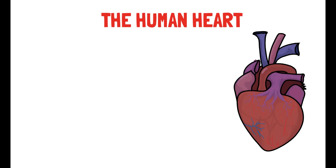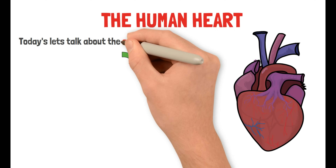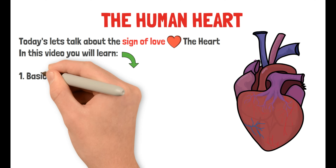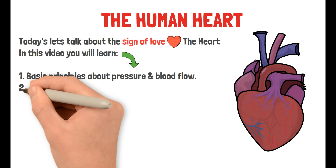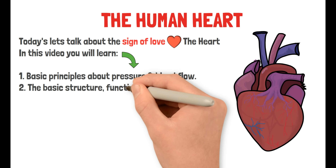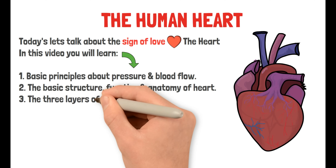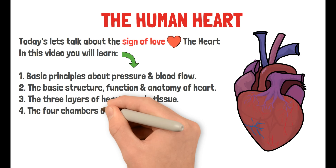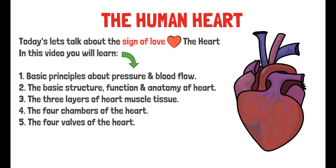The Human Heart. Today let's talk about the sign of love, the heart. In this video you will learn the basic principles about pressure and blood flow, the basic structure, function and anatomy of the heart, the three layers of heart muscle tissue, the four chambers of the heart, and finally the four valves of the heart.